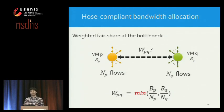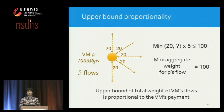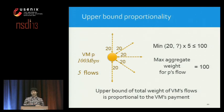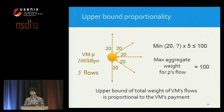We can generalize this as an equation: assuming a weighted fair share network, we define weight W as the minimum of bandwidth divided by N on the two sides. Host-compliant bandwidth allocation satisfies a property we call upper bound proportionality. In this example, VM P has five flows, and no matter what bandwidth is allocated to the other side on each flow, the sum of weights for all five flows will never exceed 100. The upper bound of a tenant's total flow weight is the same as the bandwidth and proportional to the payment — this is key to guaranteeing minimum bandwidth.